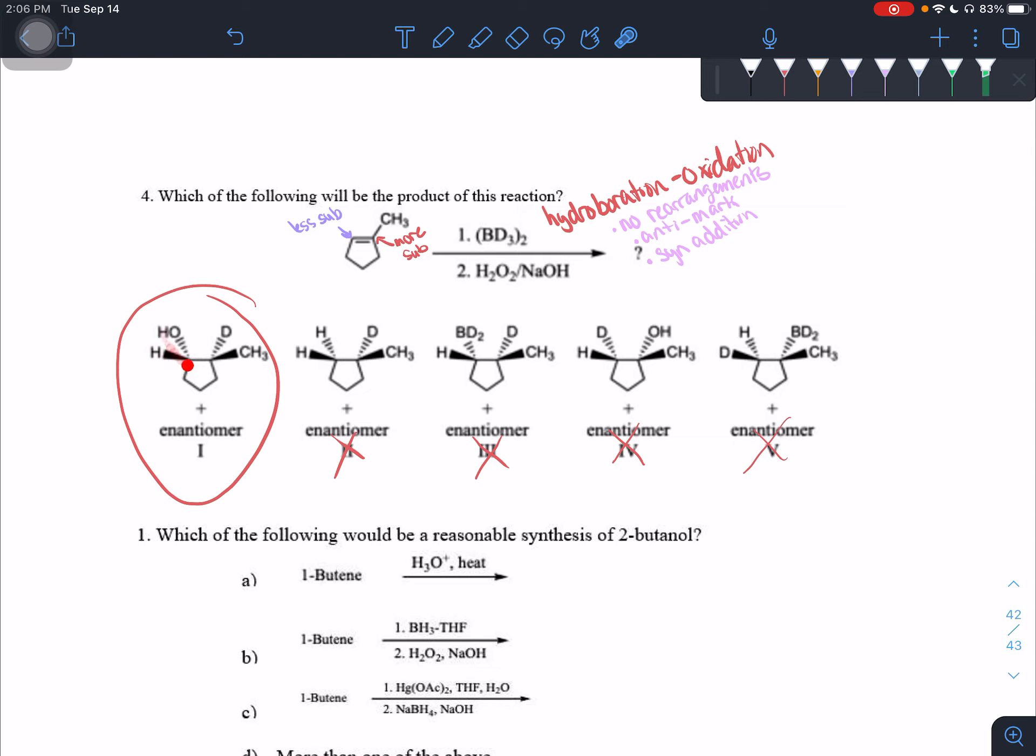So as you guys can see, we added in the alcohol dashed and we added in the deuterium, aka the hydrogen dashed as well. So it's syn addition, the alcohol is on the less substituted side and there was no rearrangements that took place. So for the ones that have BD2 still in there, that just means we did the hydroboration and not the oxidation stuff. So these two are wrong.